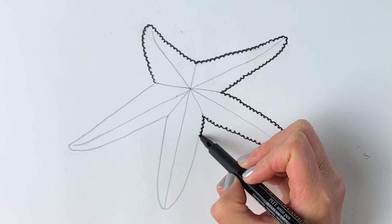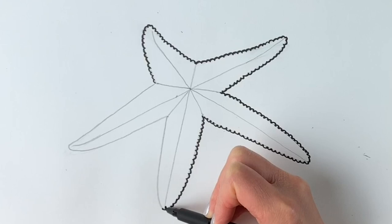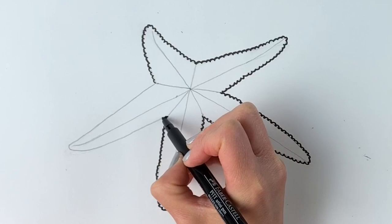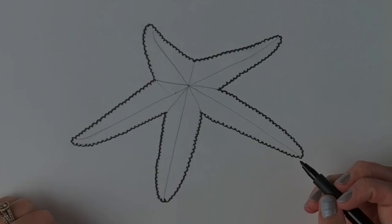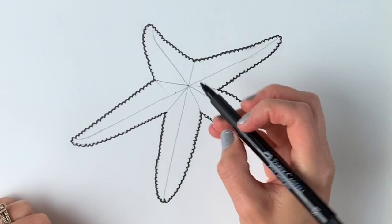I'm just going to speed this up just slightly now. Okay, now we're going to do some details. So right in the center we're just going to draw a dot.